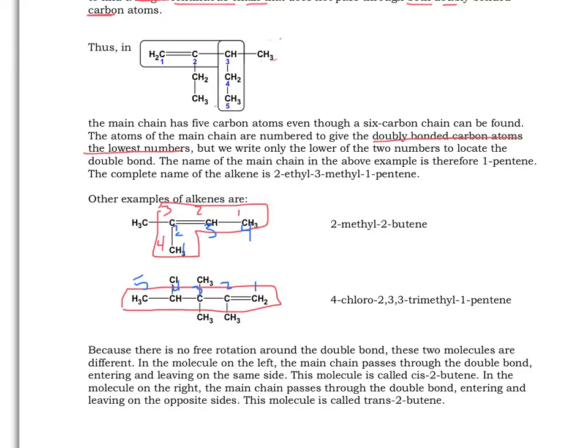Now something that sometimes comes up is how come we only have one number identifying where the double bond is. It's understood that the double bond is between two carbons and we're only going to list the lowest number of the two carbons that has the double bond.